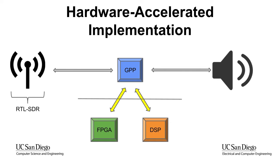This is the hardware-accelerated implementation of a radio. There is an input source, then a GPP which takes the input samples, does some of the processing, and offloads some of the intensive operations to the FPGA or DSP. Then it collects the output and passes it to the sink.